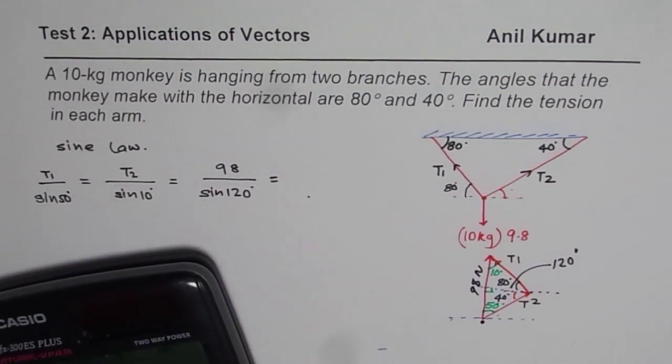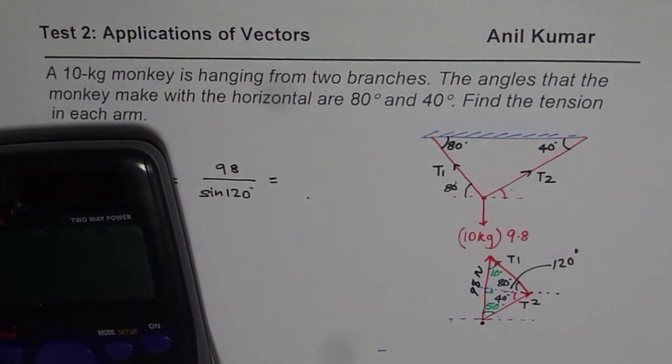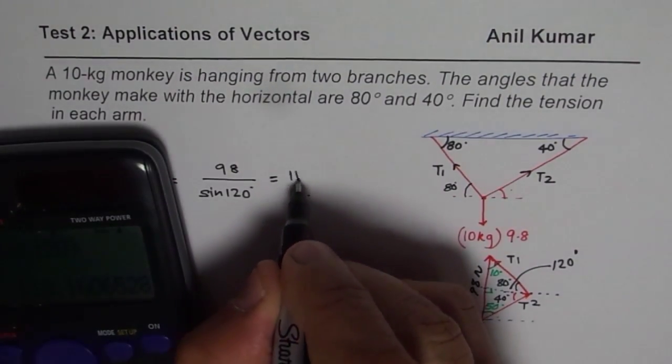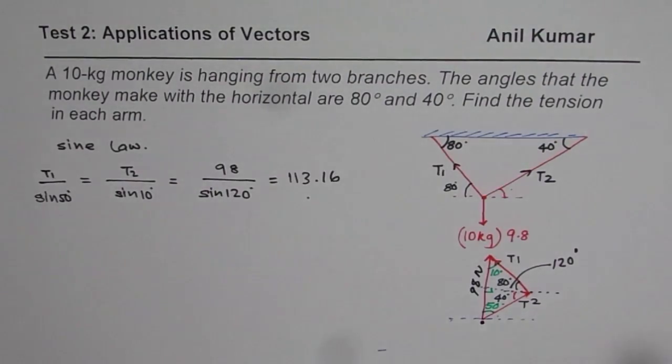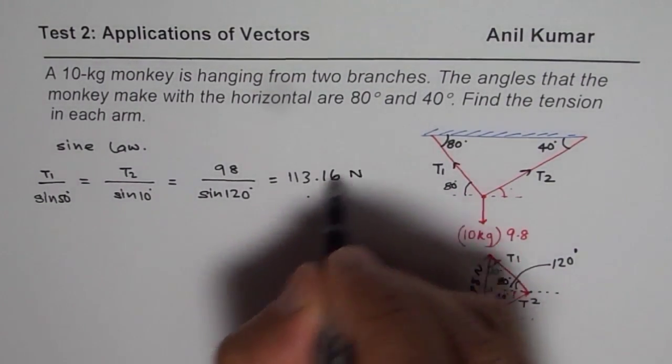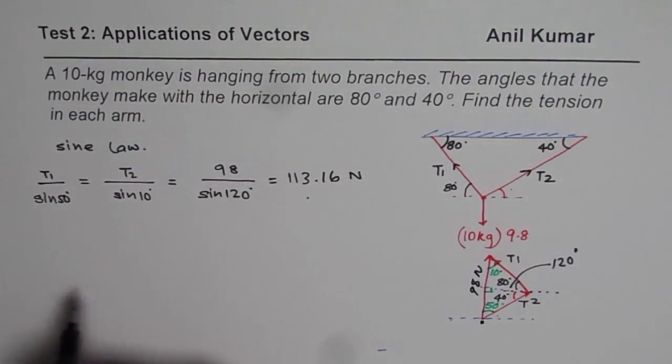Now it is always a good idea to first calculate this value. This is a constant. So it is 98 divided by sine of 120 degrees. It gives us 113.16, so that much newtons is what we get as this particular ratio.